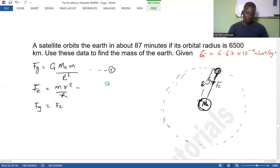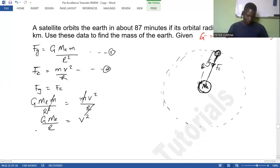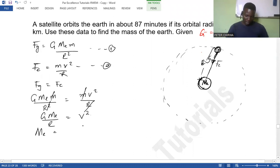So the centripetal force, we know that is given by M, because it's this satellite of small letter M, V squared over R. That's the centripetal force for that one. Now, remember, I'm talking about this centripetal force being equal to the force of gravity.